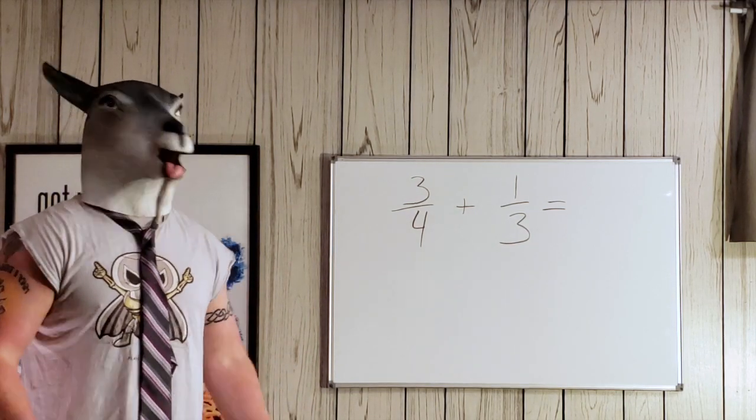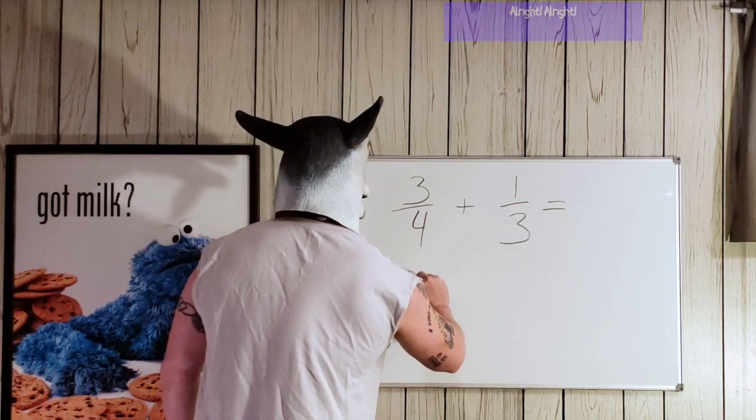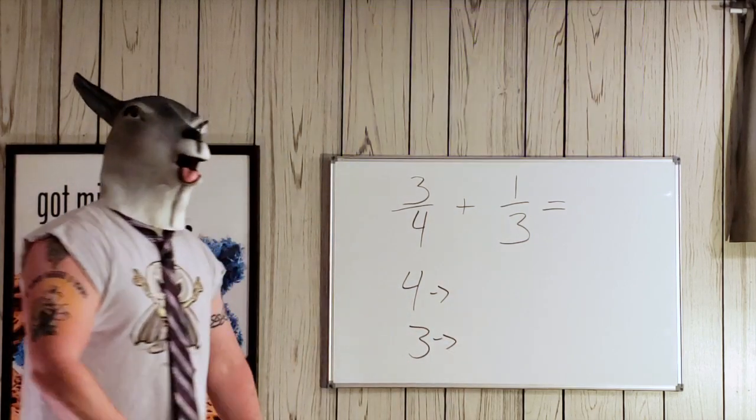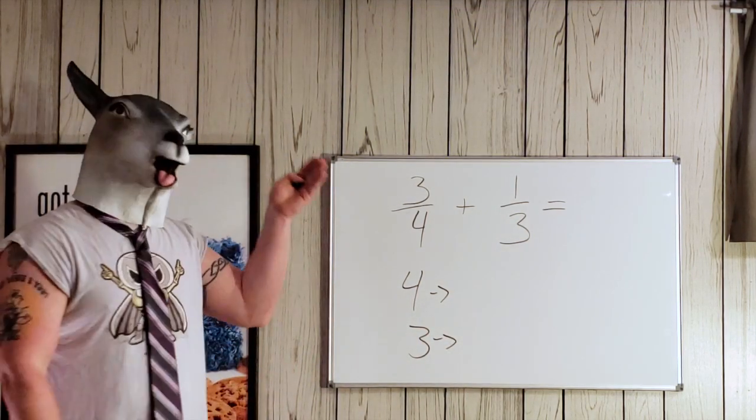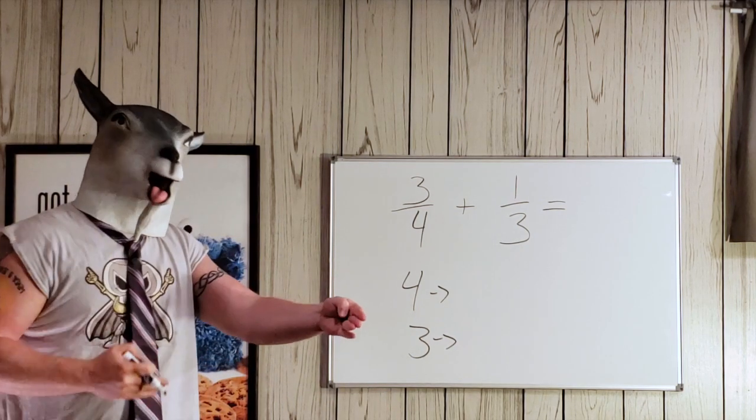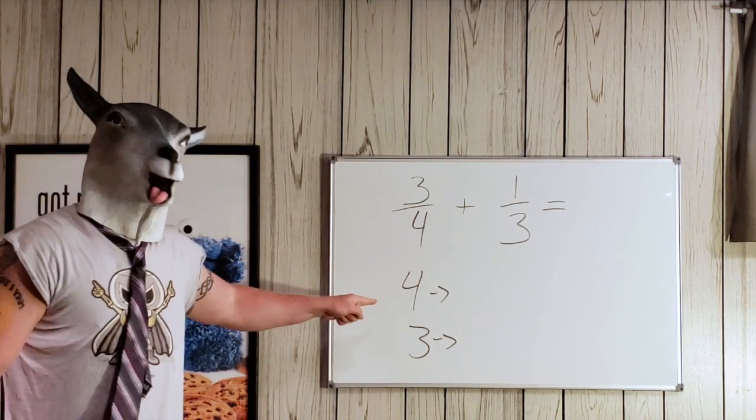We're going to take our denominators and find out what's the least thing in common with them. So let's do this. We're going to take our 4 and our 3, put the 4 here, put the 3 here. Now we're just going to put out the multiples. We're going to find the number that's the same and we're going to run with it.